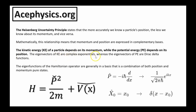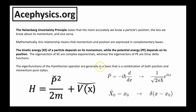The eigenvectors of kinetic energy are complex exponentials, whereas the eigenvectors of potential energy are the Dirac delta functions. The Hamiltonian is an operator; P is momentum, and momentum is replaced with the momentum operator minus i h-bar d by dx. This has complex exponential eigenfunctions, which are eigenfunctions of constant momentum. V is the potential energy, written in terms of position operators, whose eigenfunctions are Dirac delta functions. The eigenfunctions of the Hamiltonian operator are generally in a basis that is a combination of both position and momentum pure states.